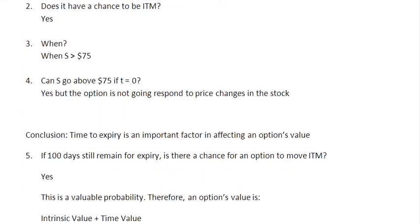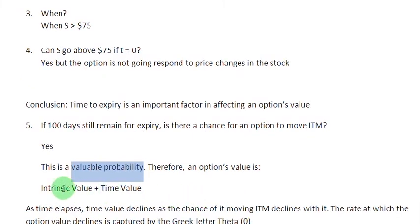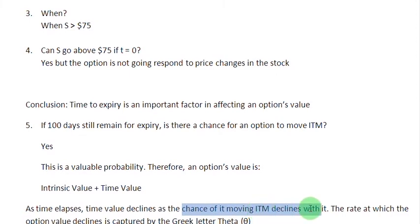So time, therefore, is an important factor. And this chance, this probability, is a valuable probability. Therefore, we can say that the value of an option is equal to two things: number one, its intrinsic value, and number two, its time value — time value has to be factored in. Higher the time remaining to maturity or expiry, the greater the chance that the option may move in the money at some point in time. But as time elapses, the time value declines because the chance of the option moving in the money declines with it.